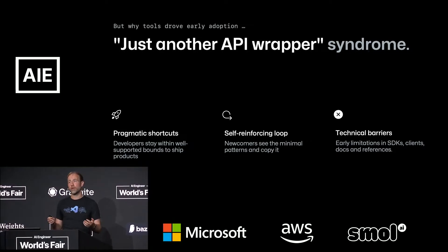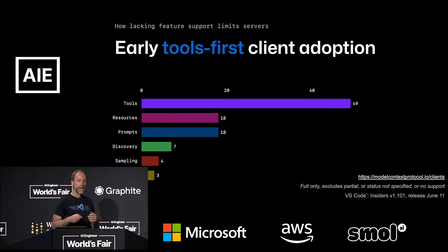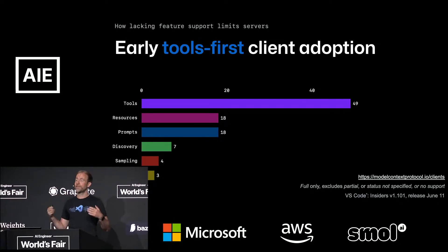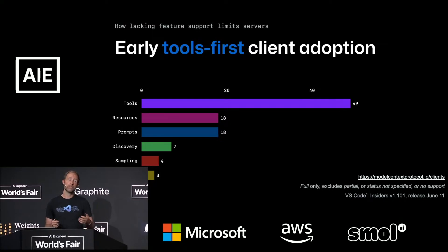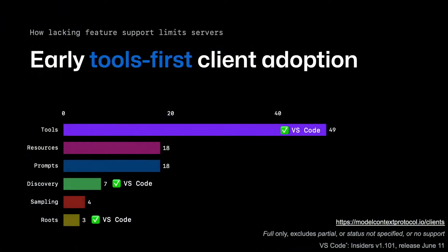That creates a reinforcing loop, because once you see how MCP works, you just use the same stacks and repeat the same tools-only ecosystem. And there are technical barriers — missing support in the clients, SDKs, documentation, and references. If you look at the adoption chart from the Model Context Protocol website, everybody goes for tools because that's where the most immediate success is. In VS Code it's the same thing. When we launched with MCP support two months ago, we started with tools and already added discovery and routes. I'm happy to announce that with VS Code's upcoming release, V1.10 — already in Insiders now, so download it — we actually have full spec support.